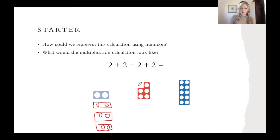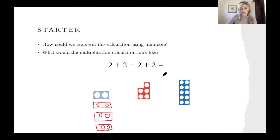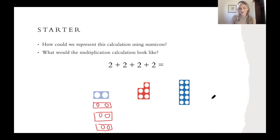The next question says: what would the multiplication calculation look like? I've already got the repeated addition sentence on the screen, so what would my multiplication calculation look like? Let's just double check together quickly. I've got one, two, three, four groups, and in each of my groups I've got two. Pause the video to write down the multiplication calculation for me now.